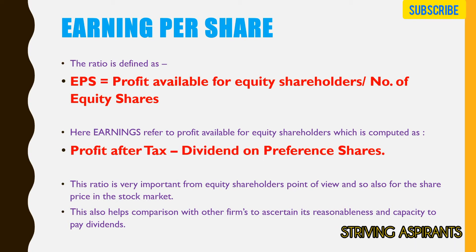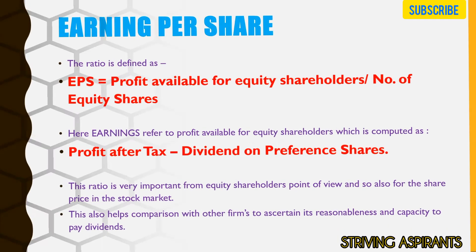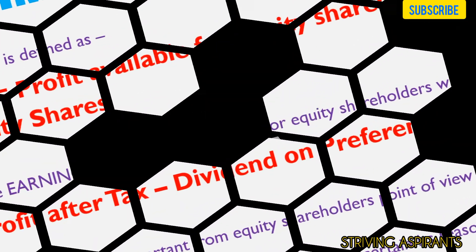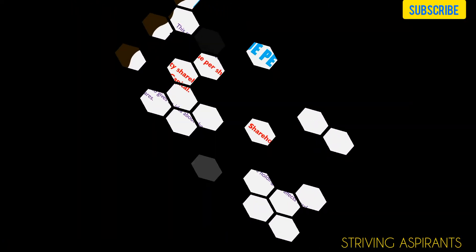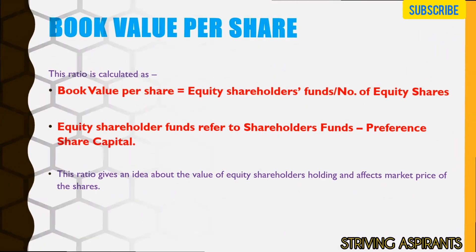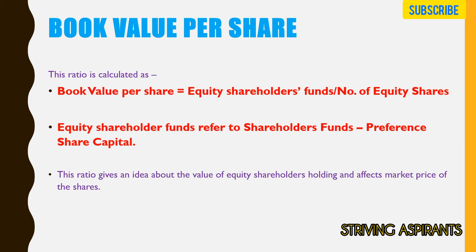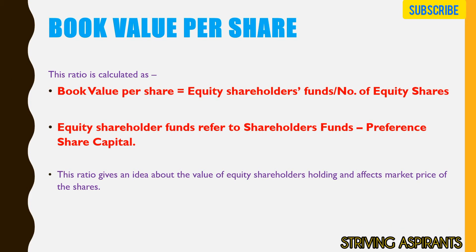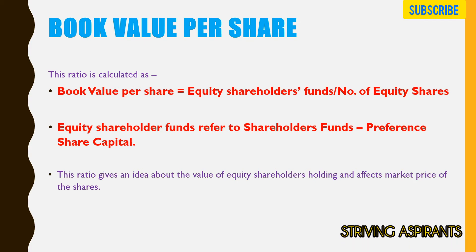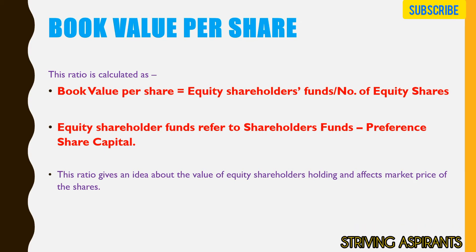Next is Book Value Per Share. It is calculated as: Equity Shareholders' Fund divided by Number of Equity Shares. Equity shareholders' fund refers to shareholders' fund minus preference share capital. This ratio gives an idea about the value of equity shareholders' holding and affects the market price of the shares.